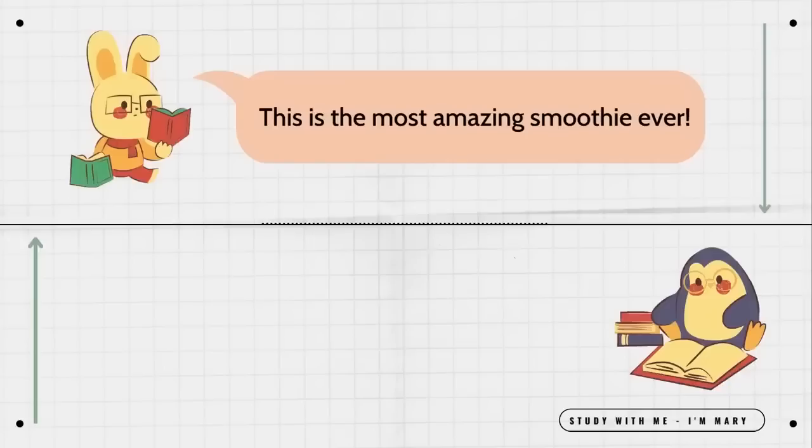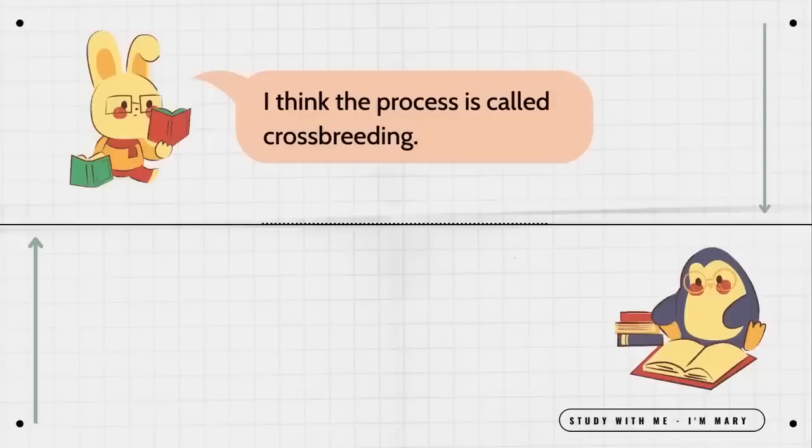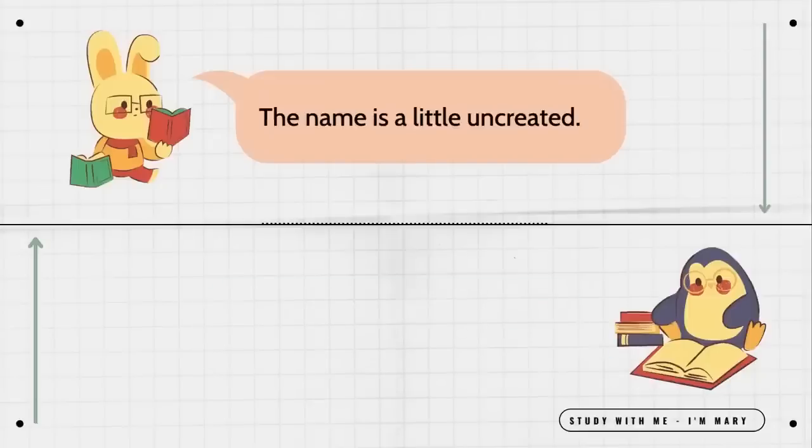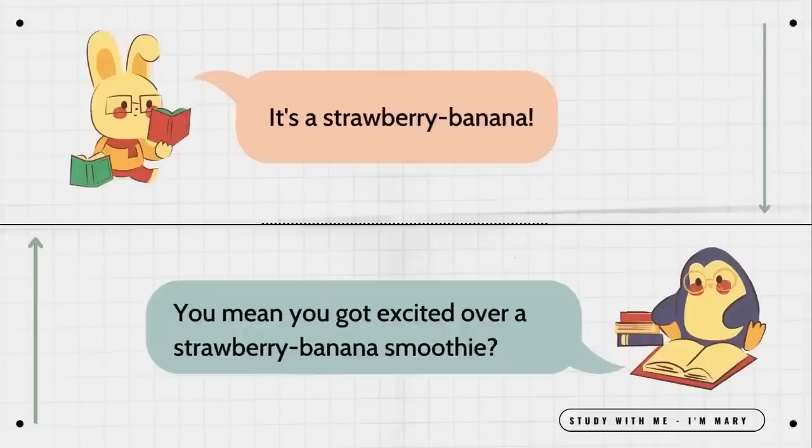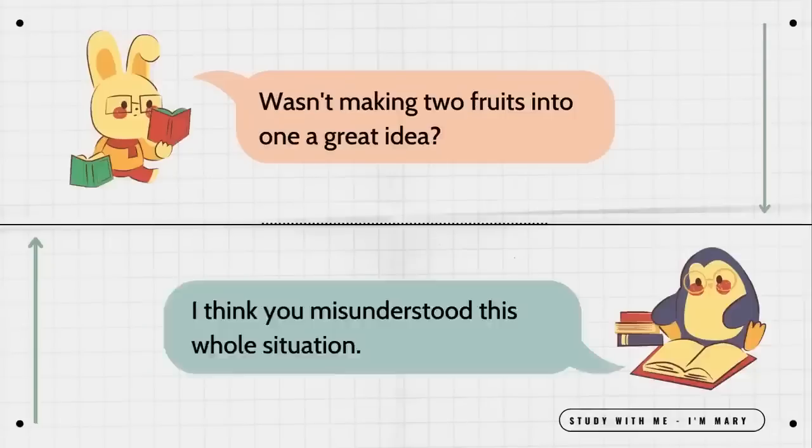This is the most amazing smoothie ever. What is so amazing about it? It's made with a fruit humans invented. How did humans invent a fruit? I think the process is called crossbreeding. That's amazing. What is the fruit called? The name is a little uncreative. Oh? Tell it to me. It's a strawberry banana. You mean you got excited over a strawberry banana smoothie? Wasn't making two fruits into one a great idea? I think you misunderstood this whole situation.